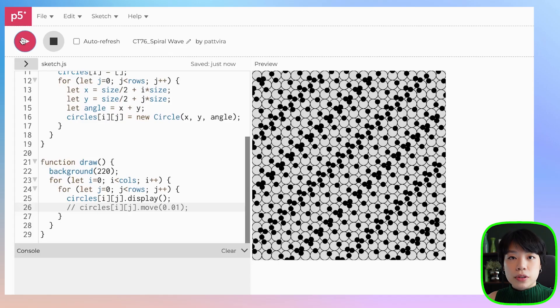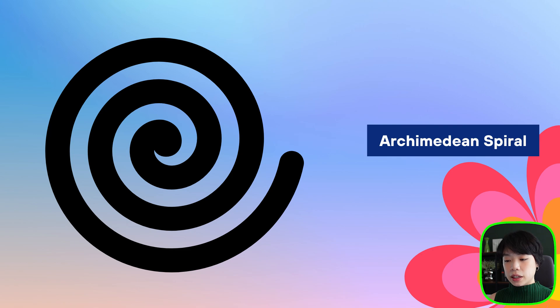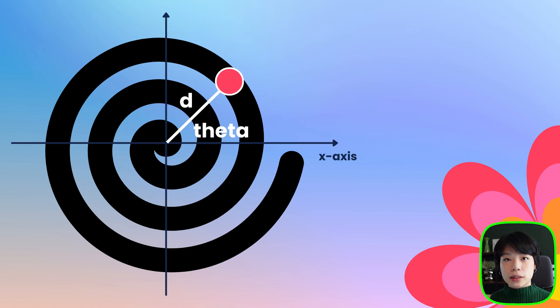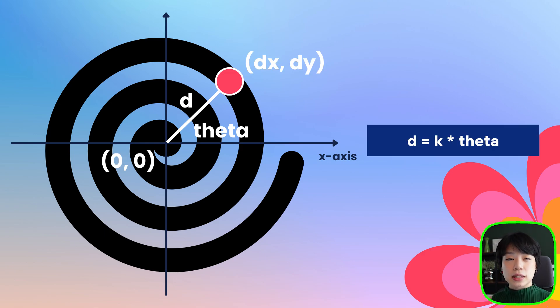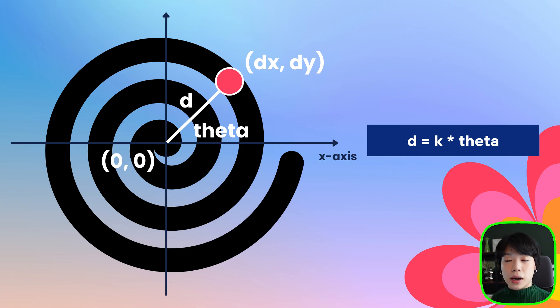To create a spiral pattern, we need to look at an equation of a spiral. There are actually many types of spirals, but the one we're going to focus on is called an Archimedean spiral, named after the 3rd century BC Greek mathematician Archimedes. The distance of a point along this spiral is proportional to the angle theta measured from the x-axis. We can describe this using the equation d equals k times theta, where d is the distance from the point to the center of the spiral and k is a constant at which the spiral grows.